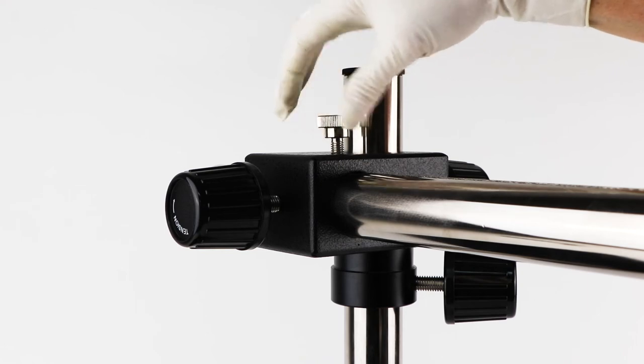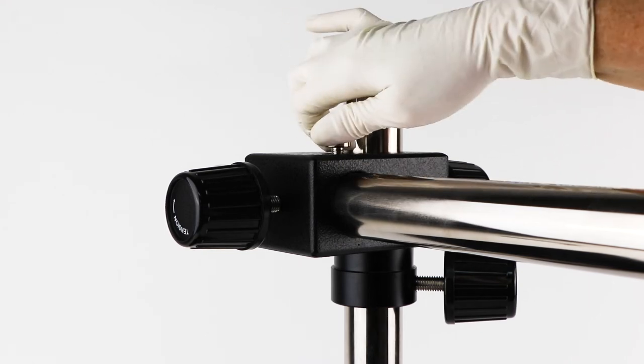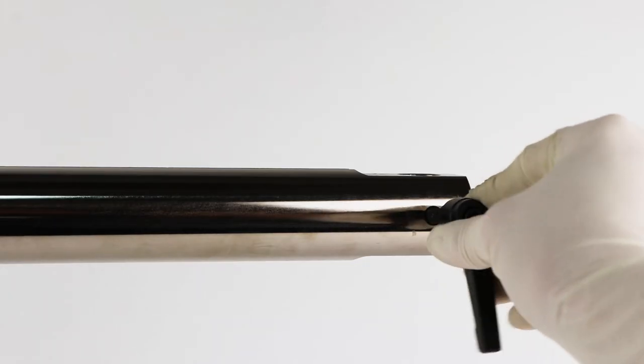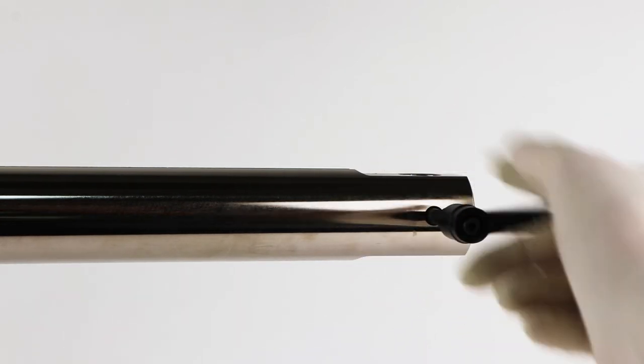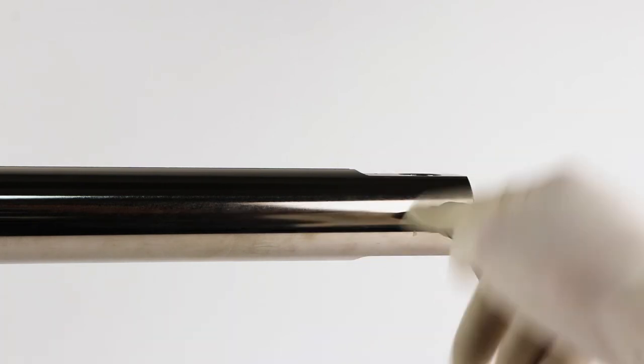Insert the boom locking screw and tighten it to secure the horizontal bar. Install the clutch handle in the end of the horizontal bar by screwing it in place. This handle is used to secure the focus mount in the end of the boom stand.